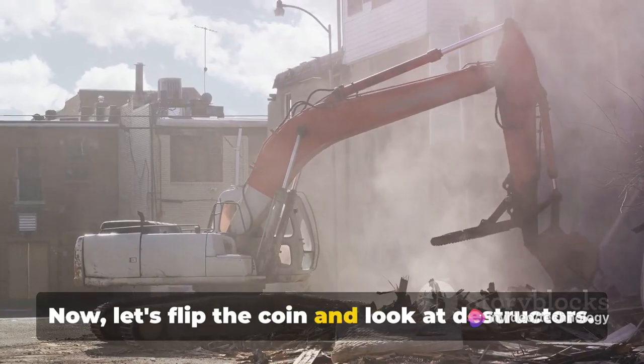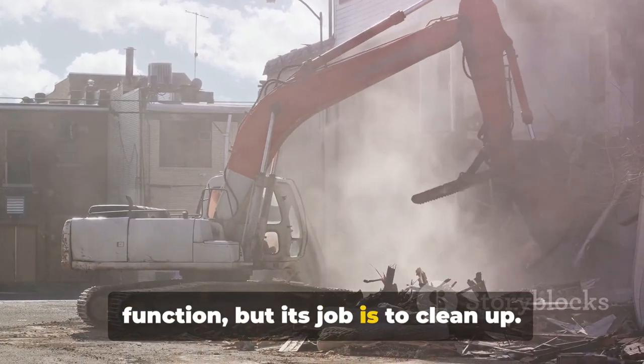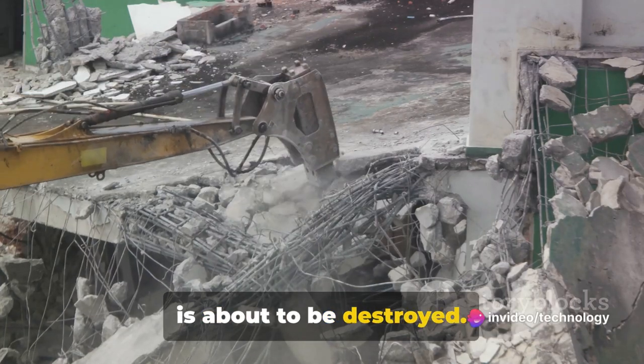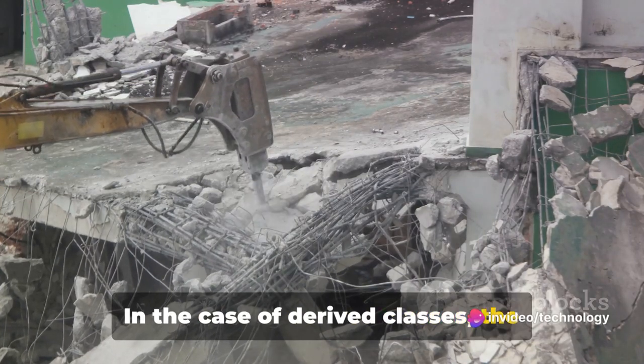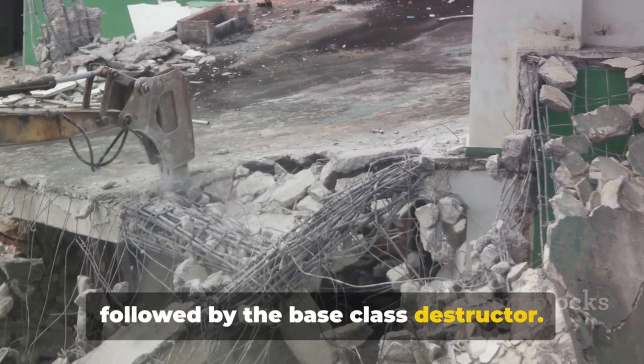It's like a safety check that ensures the inherited parts of the derived class are correctly set up before the new parts are added. Now let's flip the coin and look at destructors. A destructor is another special member function, but its job is to clean up. It's automatically called when an object is about to be destroyed.